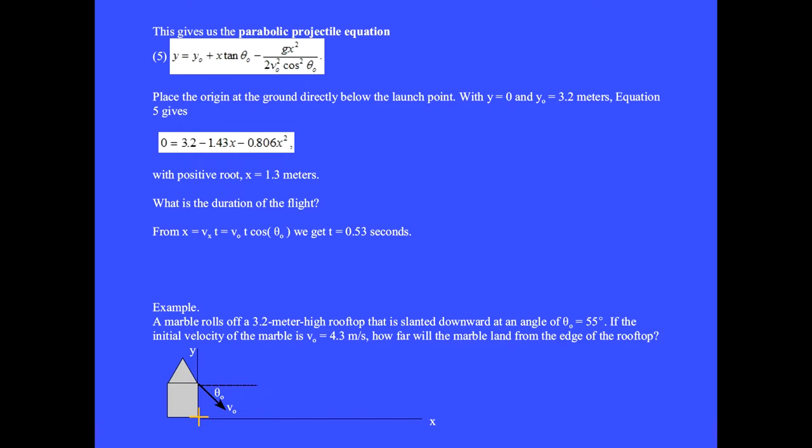Place the origin at the ground directly below the launch point. With y equals 0 and y₀ equal 3.2 meters, the parabolic projectile equation gives 0 equal 3.2 minus 1.43x minus 0.806x squared with positive root x equal 1.3 meters.